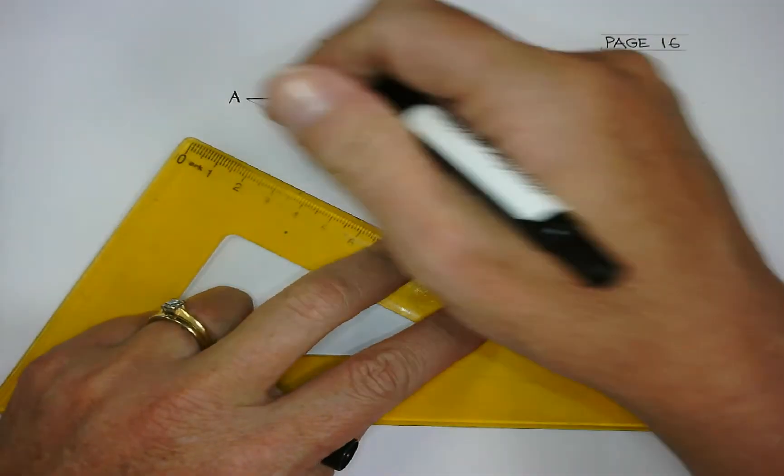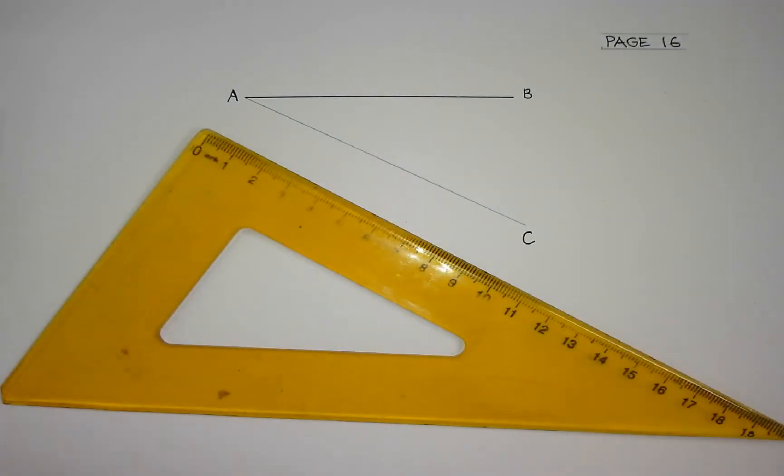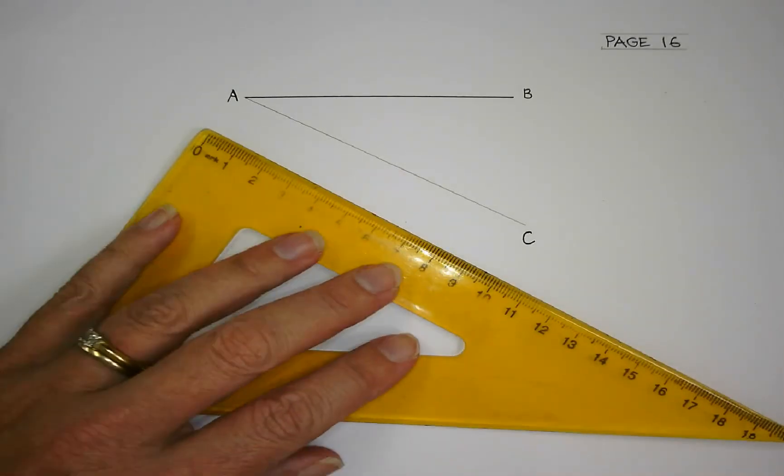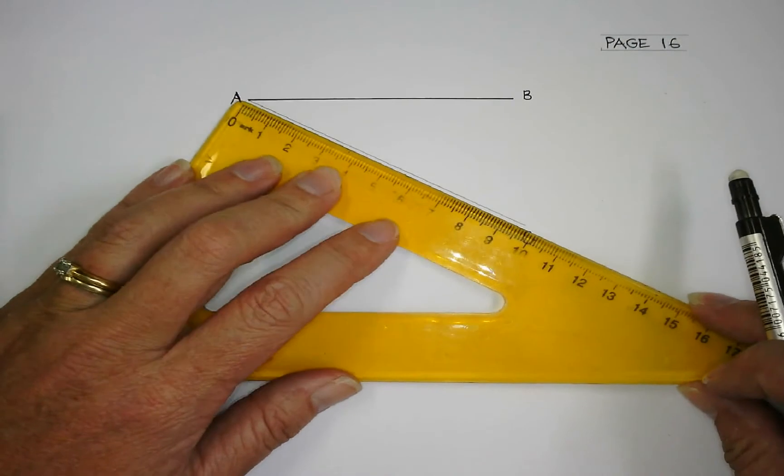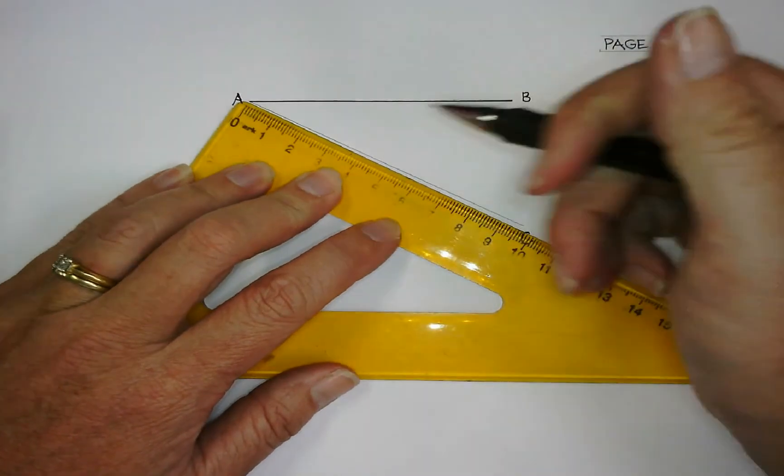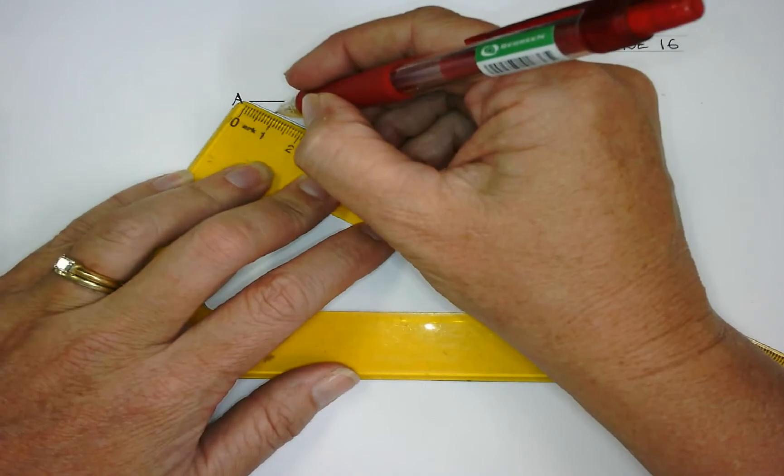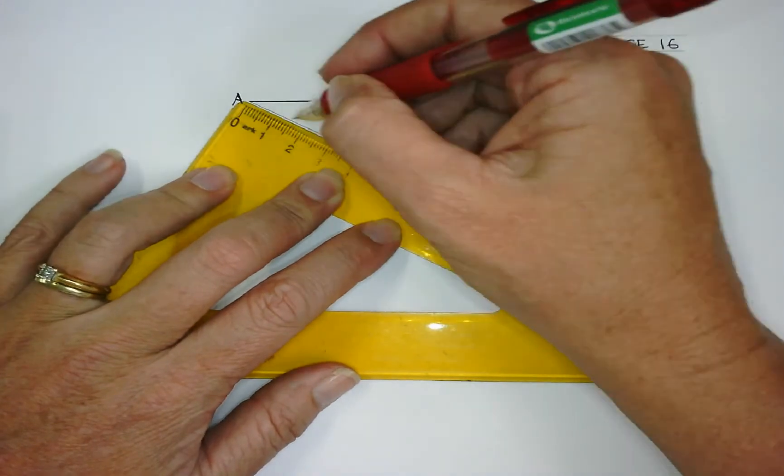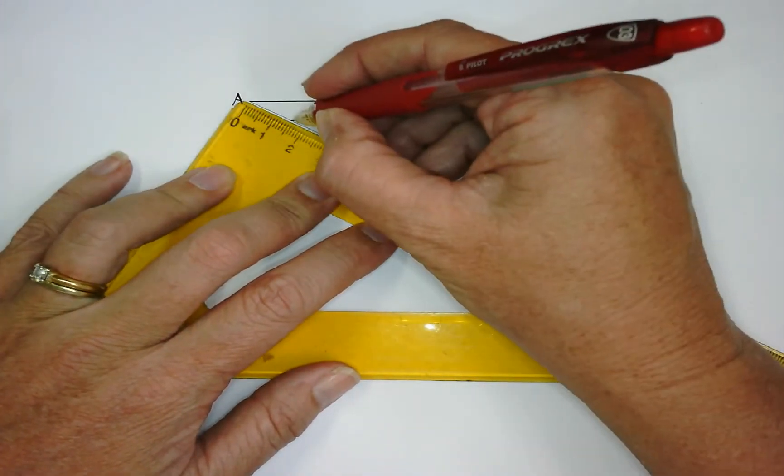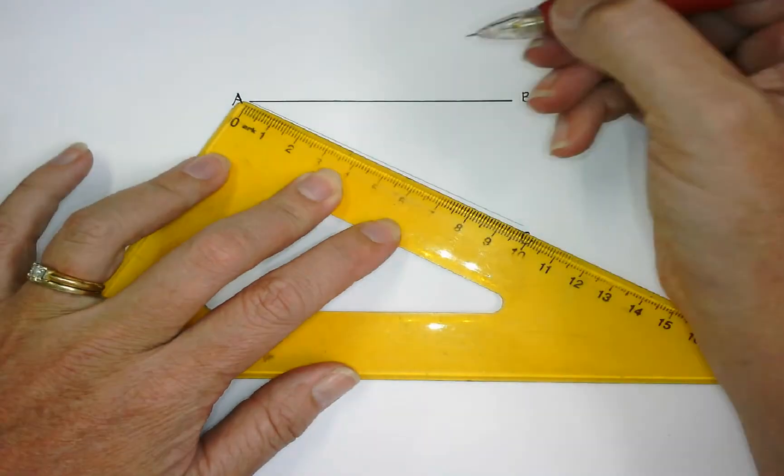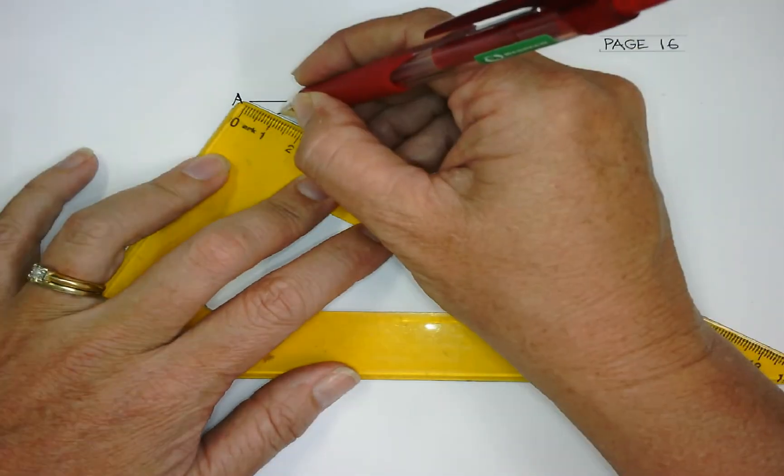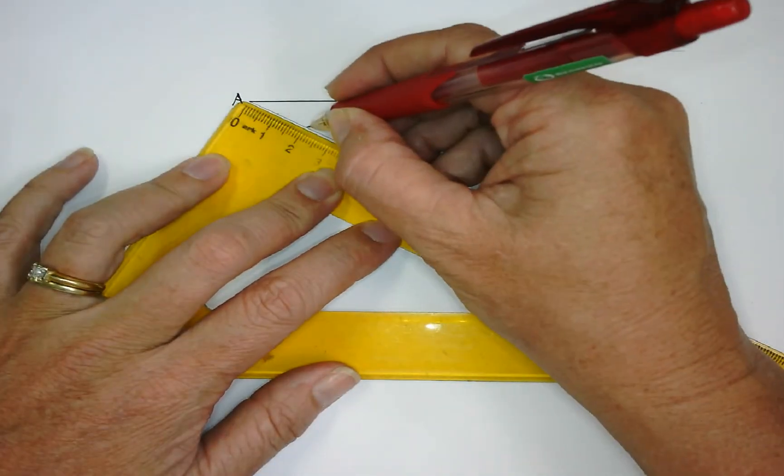Divide this line into an equal number of parts. How many parts do you want to divide this line into? Four. So I'm going to go, and it doesn't matter whether you use centimeters or millimeters. You could use 10, 20, 15, it doesn't matter. I'm going to use 10 millimeters.